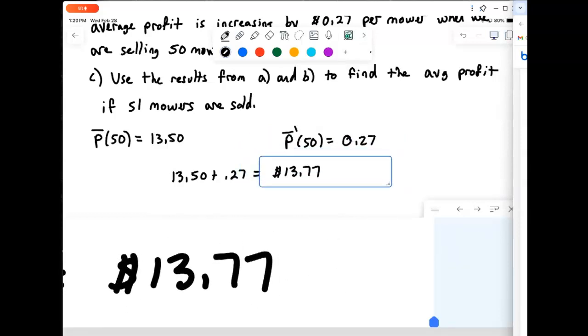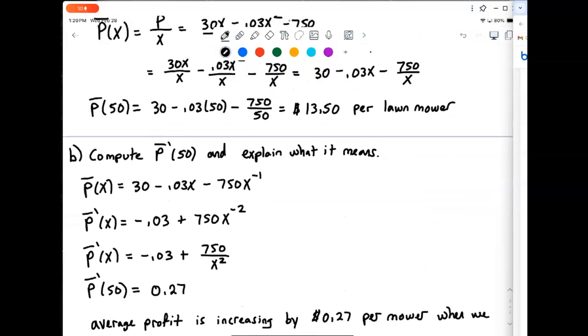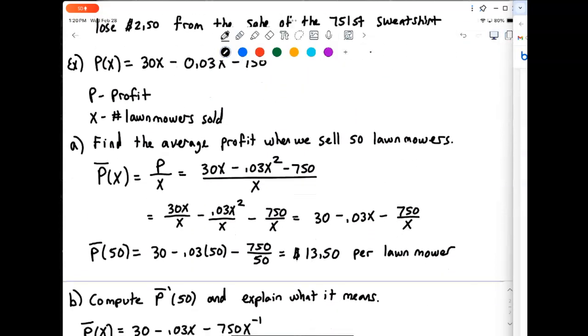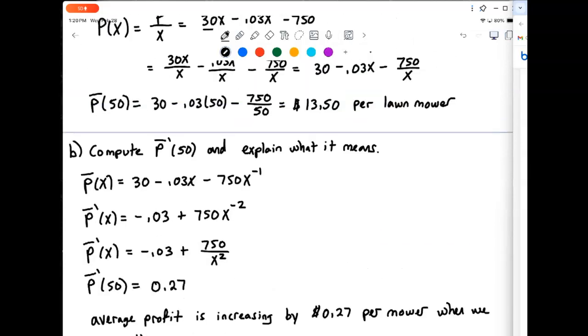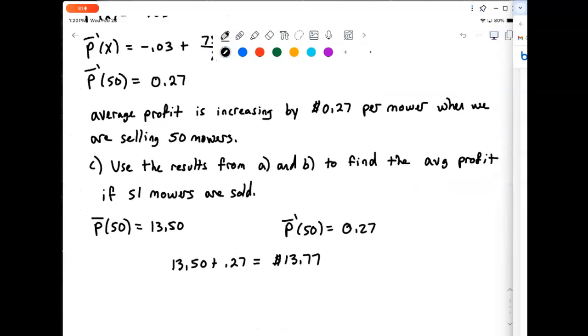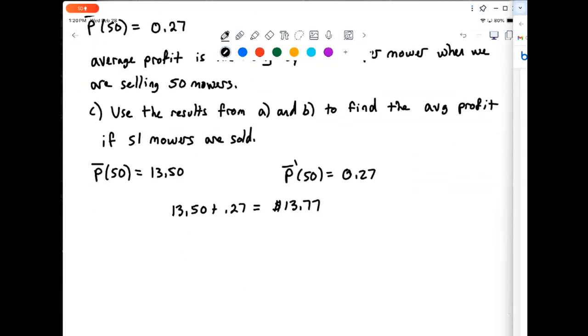So we would, based on those two parts, we would figure out the average profit is actually 13 dollars and 77 cents. So this is just looking here, this idea of marginal functions again, except this time we're dealing with the marginal average profit function instead of the marginal profit or marginal cost. We're dealing with the marginal average cost function here. But this is just showing that connection between the two functions there, the original function and its derivative, and kind of comparing that to the next value. Again, it's not going to be exact, but it's going to be darn close when we make this that one unit increase.